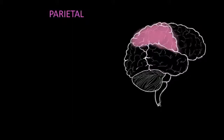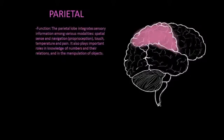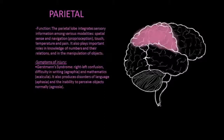Moving on to the parietal lobe. It integrates sensory information among various modalities such as proprioception, touch, temperature and pain. It also plays important roles in knowledge of numbers and in the manipulation of objects. One result of parietal lobe injuries is Gerstmann syndrome, where the patient will experience right-left confusion, difficulty in writing, disorders of language, and the inability to perceive objects normally.